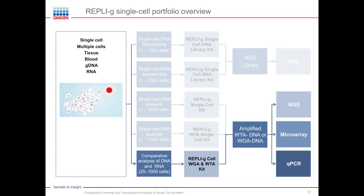The RepliG cell WGA and WTA kit performs a highly parallelized process, starting WGA and WTA from the same sample. This process can be started directly from 25 cells up to 1,000 cells without an extra purification step for RNA or DNA. I would now like to introduce the comparative transcriptome and genome NGS analysis.